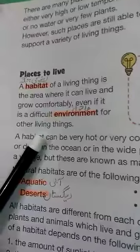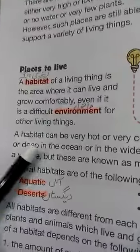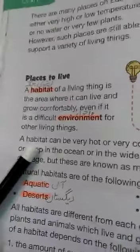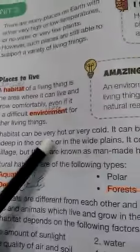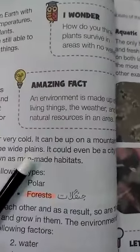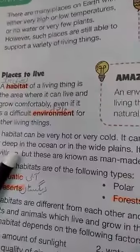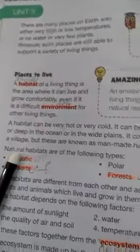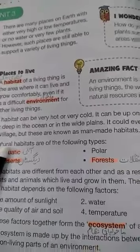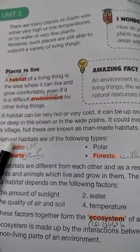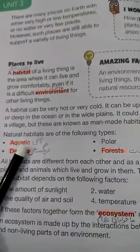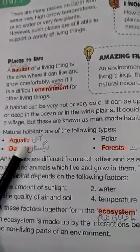A habitat can be very hot or very cold. It can be up on a mountain or deep in the ocean or in the wild plains. It could even be in a city or a village. But these are known as man-made habitats. Natural habitats are of the following types.